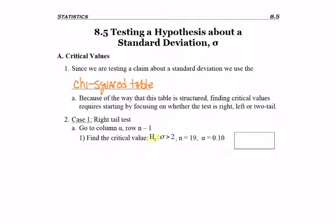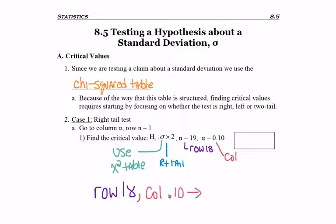Looking at this information, first I would notice sigma, which tells me I'll be using the chi-squared table. Next, I'll notice the greater-than symbol, which tells me I have a right-tailed test. I'll be going to row 18, because I'll be using degrees of freedom n-1, so 19-1 is 18. And lastly, alpha, the significance level, tells me the column to go to. Using the chi-squared table, row 18, column 1.0, I see the number 25.989, my critical value.